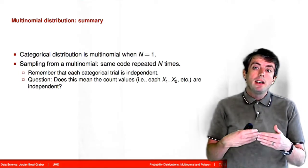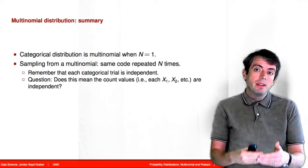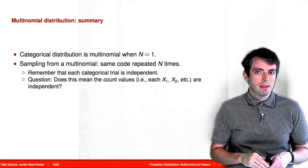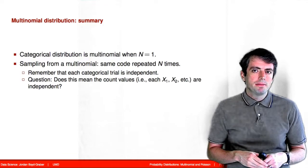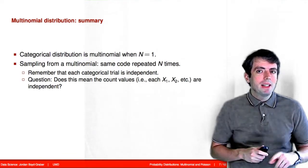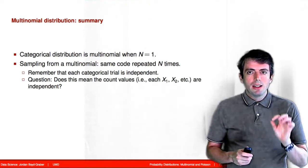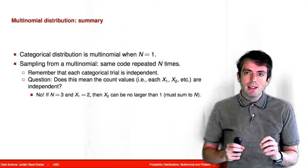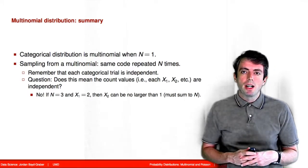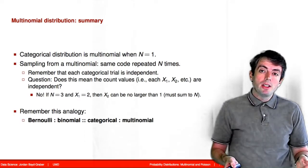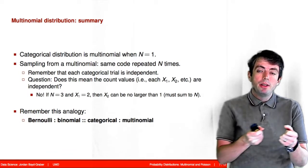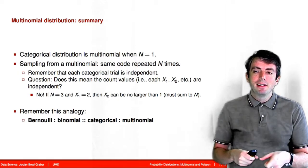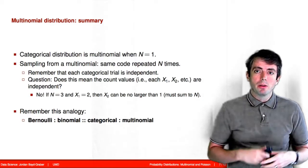One thing to keep in mind: the categorical distribution is independent, but think about whether the individual entries in a multinomial distribution are independent. Even though the individual categorical draws are independent, the entries in the multinomial distribution vector are not independent, because those entries have to sum to the number of trials. So remember the analogy: the binomial distribution is to the Bernoulli distribution as the multinomial distribution is to the categorical distribution.